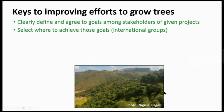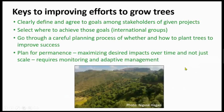The overall keys to improving efforts to grow trees include clearly defining and agreeing on goals among stakeholders, selecting where to achieve those goals — particularly for international groups coordinating with local bottom-up efforts — and going through a careful planning process of whether and how to plant trees. It's also important to plan for permanence: we need to think about maximizing desired impacts over time, not just scale. Rather than saying we want to plant one trillion trees, we should say something like: we want 200 billion trees alive and growing in 20 years. This requires monitoring and adaptive management.